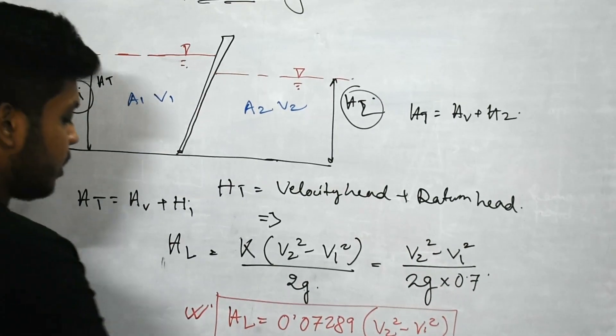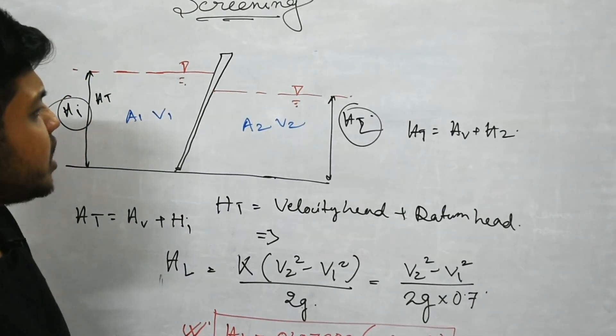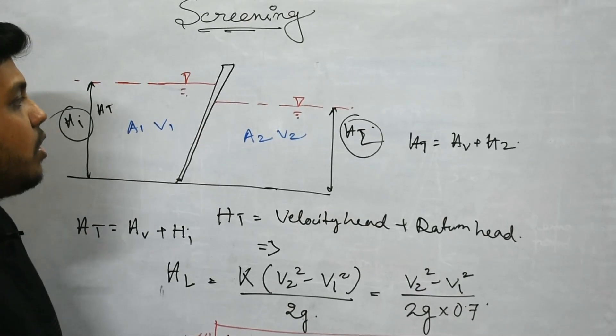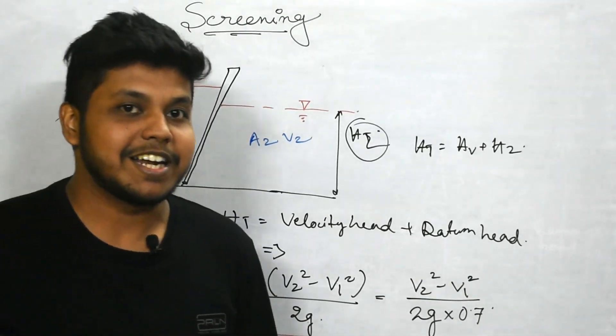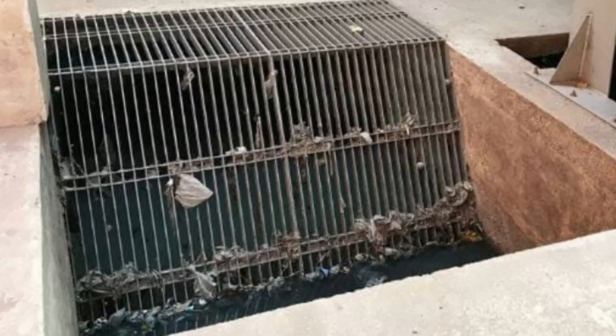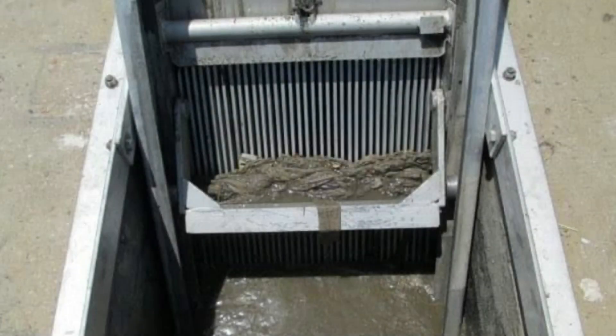Now before going to fine screen let us check this concept in detail with some pictorial presentation. You can see this is a bar screen placed at an inclination so the larger impurities are getting clogged here and the velocity of flow is getting reduced due to this retention of larger particles which causes an increase in removal efficiency.